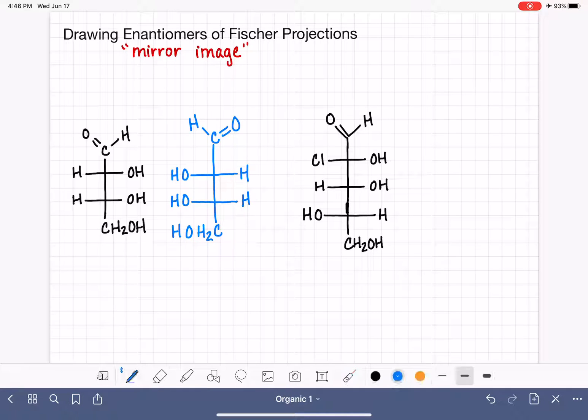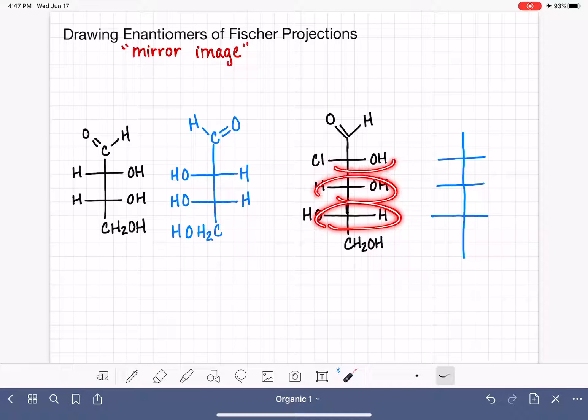However, I do want to let you know, and we'll work on this with the next example, when we are drawing an enantiomer, our only obligation is to show the mirror image of the chiral portions of the molecule. An achiral portion of the molecule, like this piece right here, because it's achiral, it doesn't have a unique mirror image.